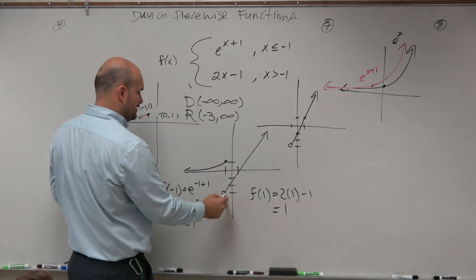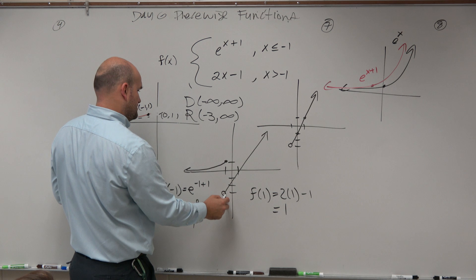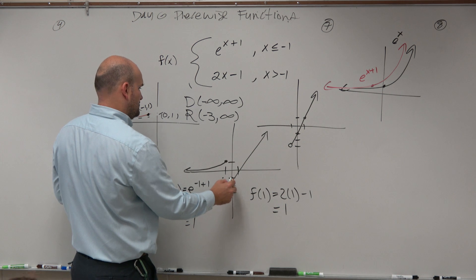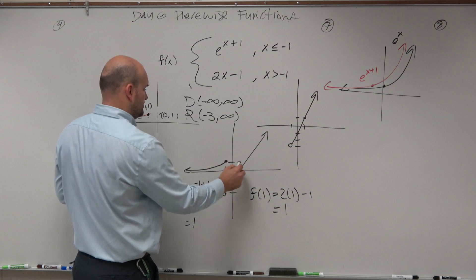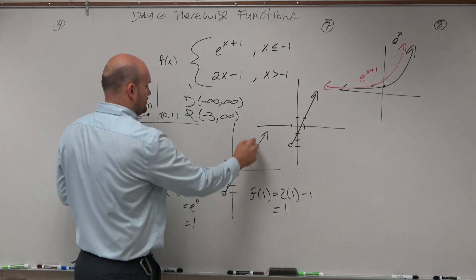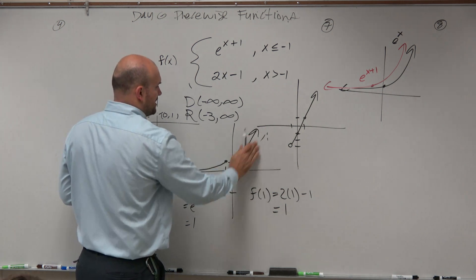So I guess I didn't graph this correctly. Up 2 over 1, up 2 over 1 — so it should be a little bit steeper of a graph.